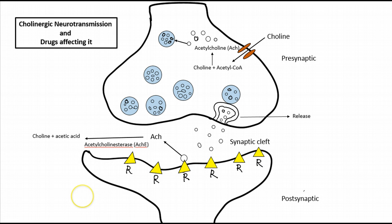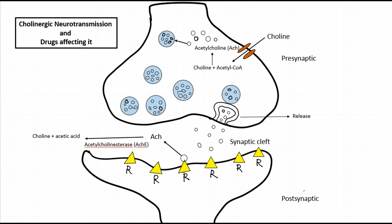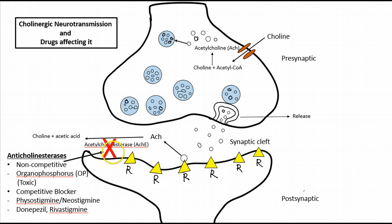Now let's look at the fate of acetylcholine. Once acetylcholine binds to the receptor, it is rapidly hydrolyzed by a very important enzyme called acetylcholinesterase. This enzyme metabolizes acetylcholine into choline and acetic acid. The group of drugs that inhibit this enzyme is called anticholinesterases.